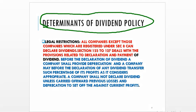The first determinant is legal restriction. We have to see the legal framework under the Companies Act 2013. All companies except those registered under Section 8 can declare dividend. Provisions applicable are Sections 123 to 127.